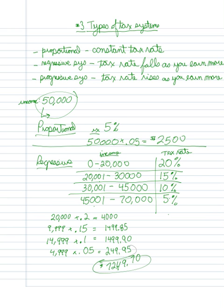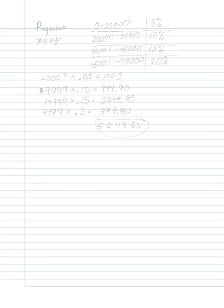So to solve a regressive tax problem, you have to break down your income into these individual brackets and calculate each portion separately. The final system we have is called a progressive tax system.